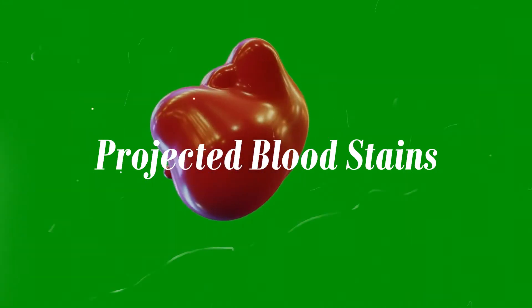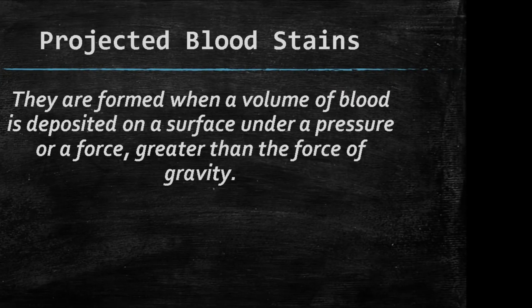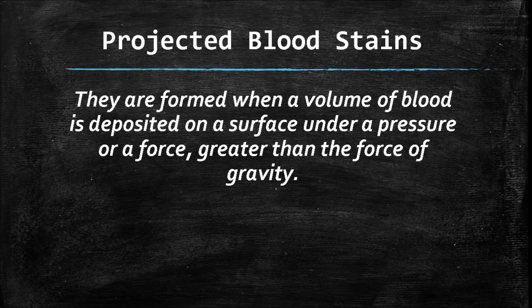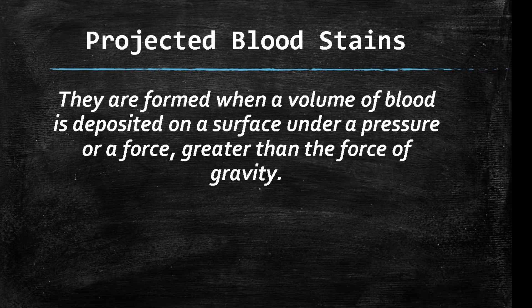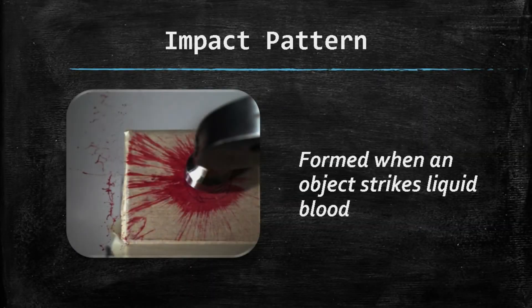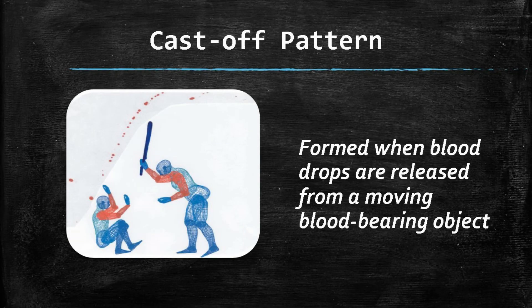Projected bloodstains are formed when a volume of blood is deposited on a surface under a pressure or force greater than the force of gravity. For example, an impact pattern is formed when an object strikes liquid blood. A cast-off pattern is formed when blood drops are released from a moving blood-bearing object.